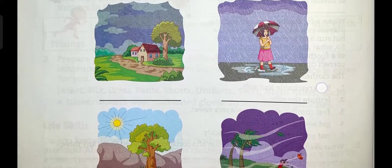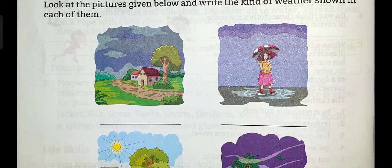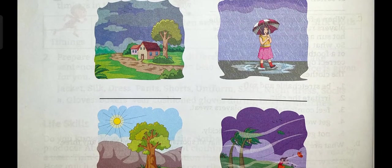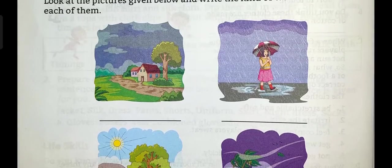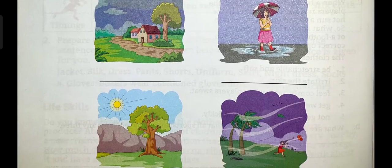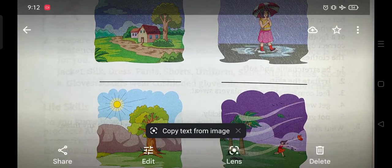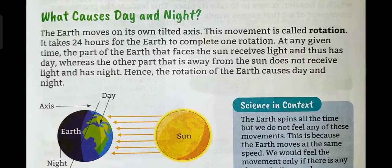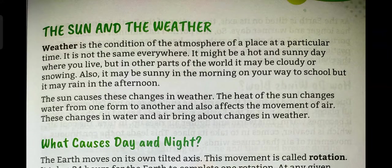First, look at the pictures. In the picture we see different types of weather. Write the name: it is cloudy weather, it is rainy weather, it is sunny weather, and it is windy weather.